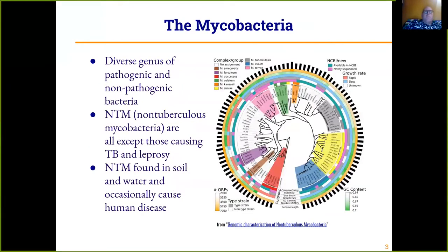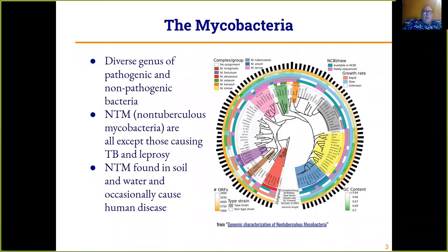In the genus Mycobacteria, in the group Mycobacteria tuberculosis complex, the mycobacteria are a diverse genus of pathogenic and non-pathogenic bacteria. The non-tuberculous mycobacteria are all of those except the ones that cause TB and leprosy. Leprosy is an even slower-growing bacterium but a reasonably close relative of Mycobacterium tuberculosis. The non-tuberculous mycobacteria are found in soil and water and occasionally cause human disease but don't tend to spread between humans.